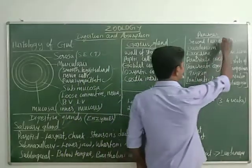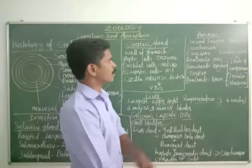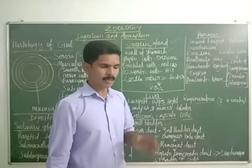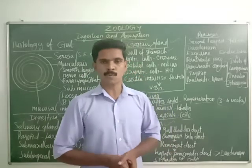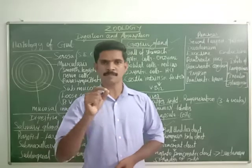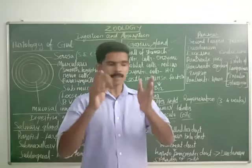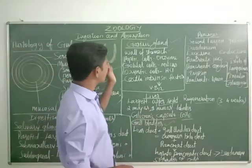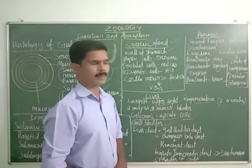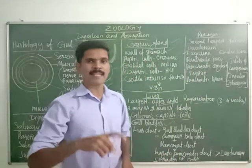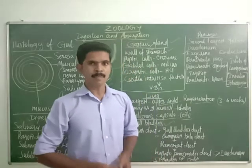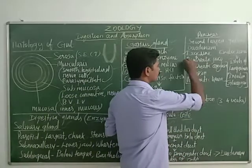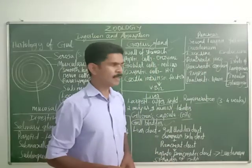The last gland of our digestive system is the pancreas. It is the second largest gland, yellow in color, and located in between the two arms of the U-shaped duodenum. The pancreas acts as both an exocrine gland and an endocrine gland. The exocrine portion secretes pancreatic juice.